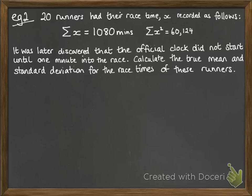However, later on it was discovered that the official clock didn't actually start until one minute into the race. So all of those race times were short by a minute. So we want to calculate the true mean and standard deviation for the race times of those runners.